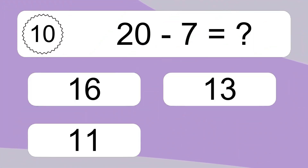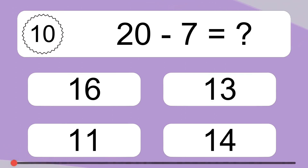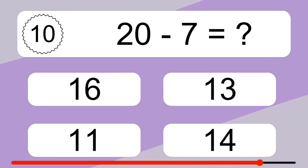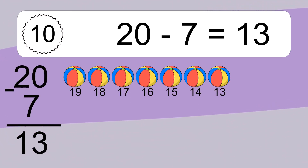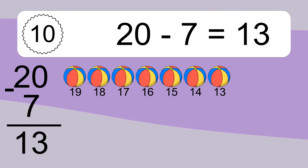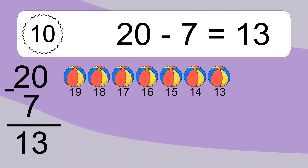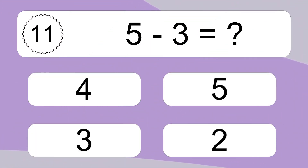20 minus 7 equals what? 20 minus 7 equals 13. Let's count it. 19, 18, 17, 16, 15, 14, 13.